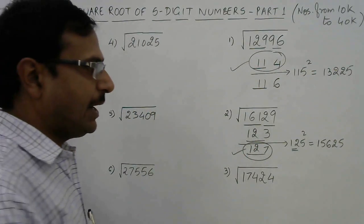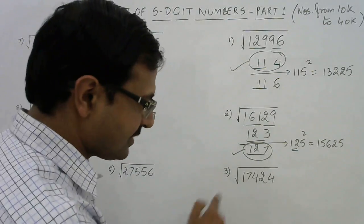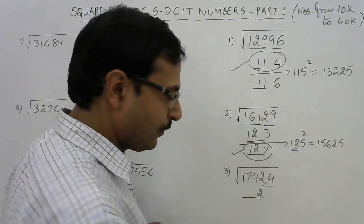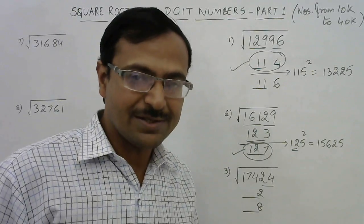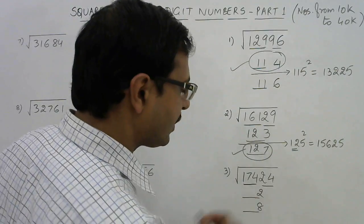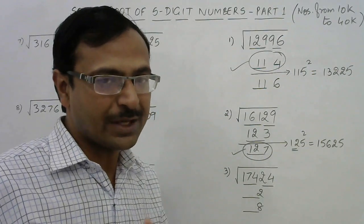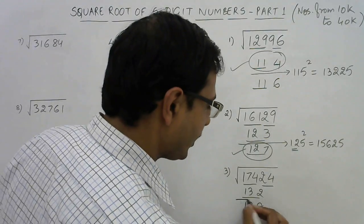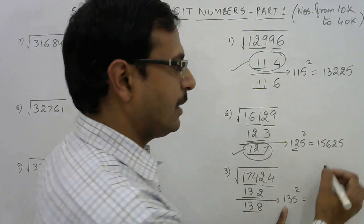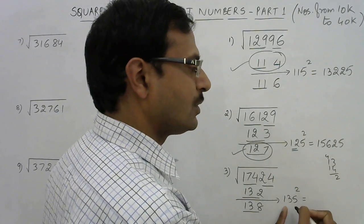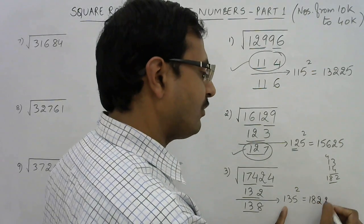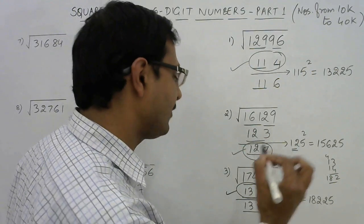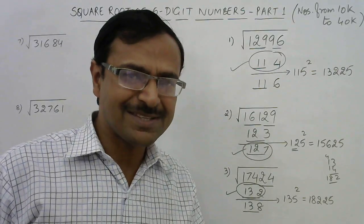Third example: the number ends with 4, so the answer ends with 2 (2² = 4) or 8 (8² = 64). The triplet is 174: 13² = 169 is just below 174 (14² exceeds it), so 13 is the remaining part. Options: 132 or 138. Intermediate: 135². Find 13 × 14 = 182, append 25 → 18225. The number 17424 is smaller than 18225, so the answer is the smaller one: 132.